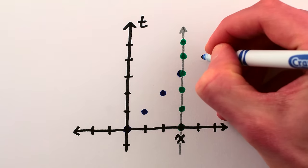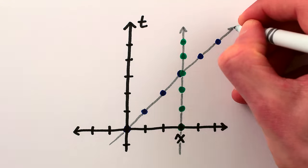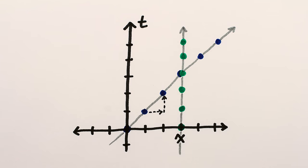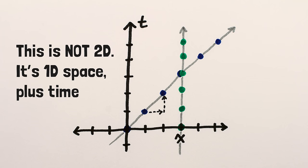For something moving one meter per second to the right, we draw a line that goes one meter to the right for every second that transpires vertically. It's important to note that we're not saying that the object is moving through 2D space along a 45 degree line. The object is moving purely one-dimensionally along the x-axis, and we're just showing those different one-dimensional positions as time passes.